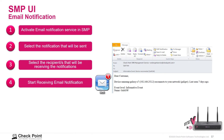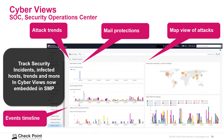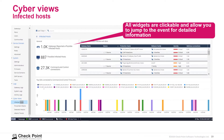A received email notification would show information such as a device reconnecting to your network after being last seen seven days ago. In the Security Operation Center CyberViews, we can see attack trends, mail protections, a map view of attacks showing their origin, and an events timeline. This allows us to track security incidents, infected hosts, trends, and more.